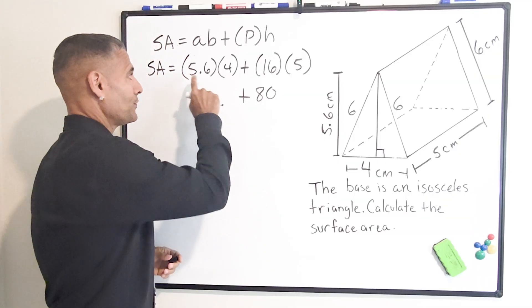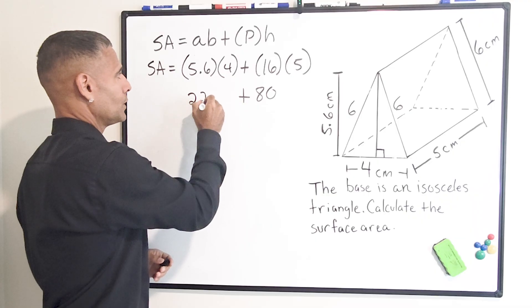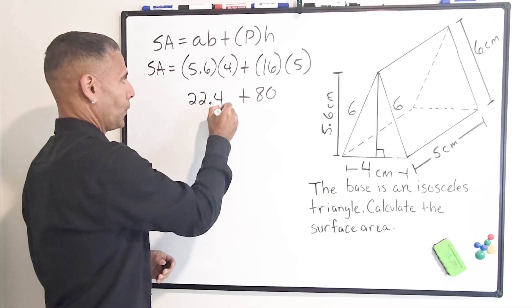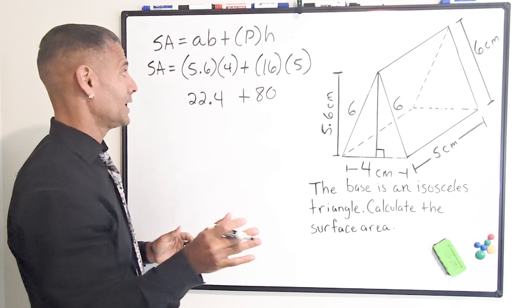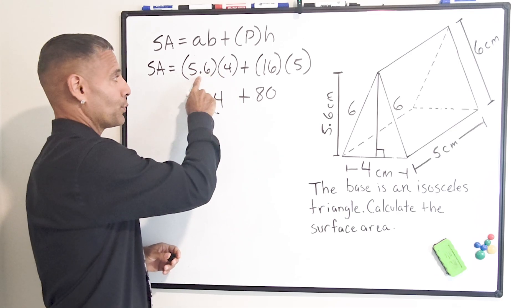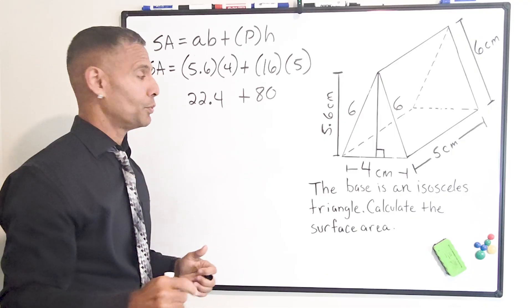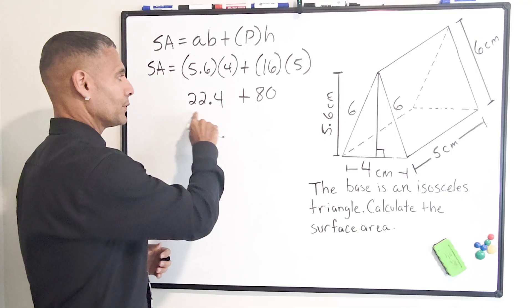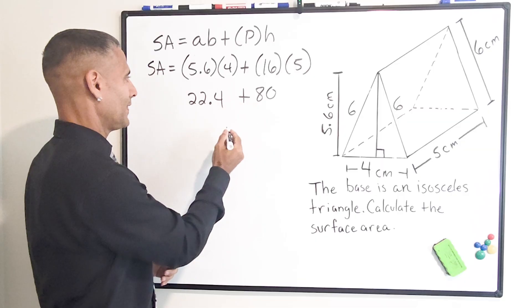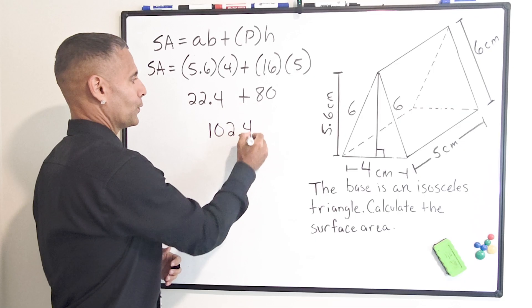And if we multiply 5.6 by four, that's going to give us 22.4. I did a little bit of mental math there. I did four times five, which is 20, and four times 0.6 is 2.4, and 2.4 plus 20 is 22.4. So what we do now is combine these two totals and that gives us 102.4 square centimeters, which is the total surface area of our triangular prism.